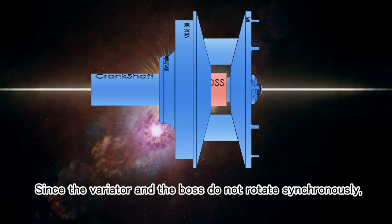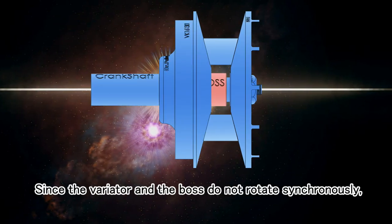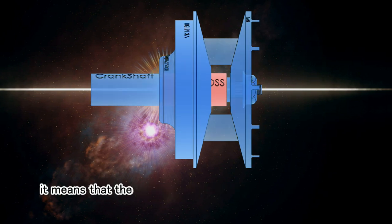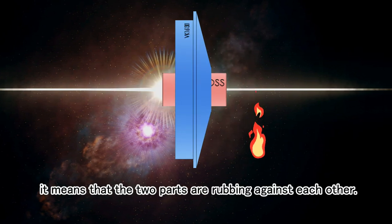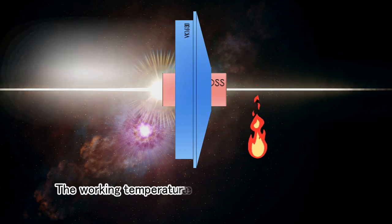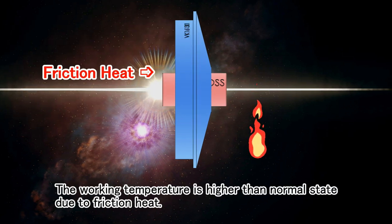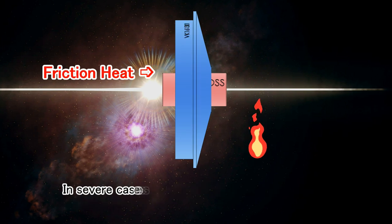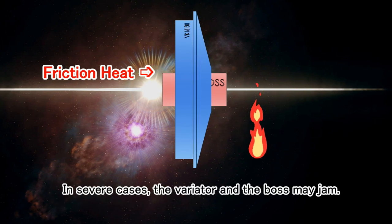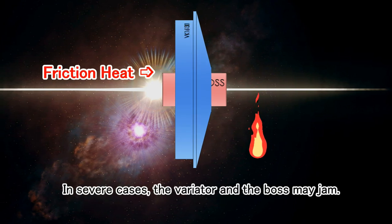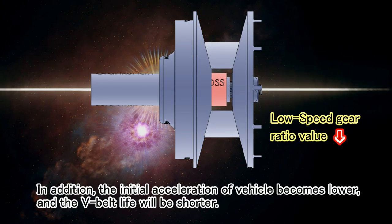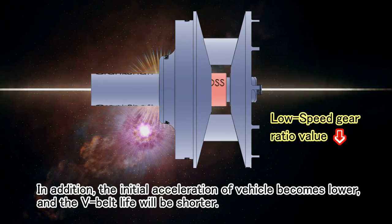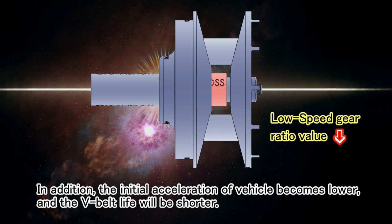Since the variator and the boss do not rotate synchronously, it means that the two parts are rubbing against each other. The working temperature is higher than normal state due to friction heat. In severe cases, the variator and the boss may jam. In addition, the initial acceleration of vehicle becomes lower and the V-belt life will be shorter.